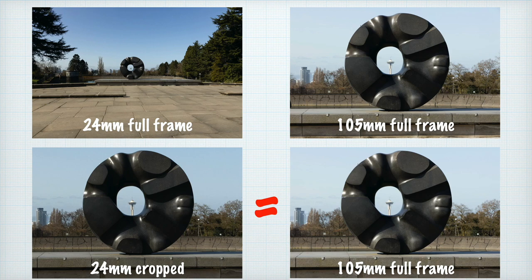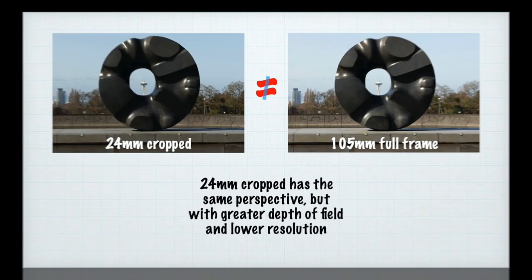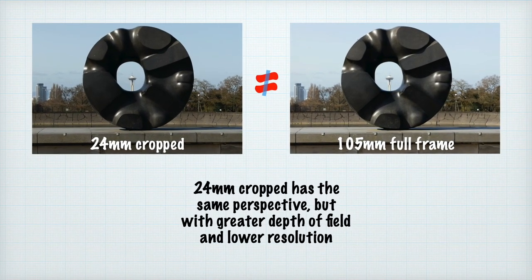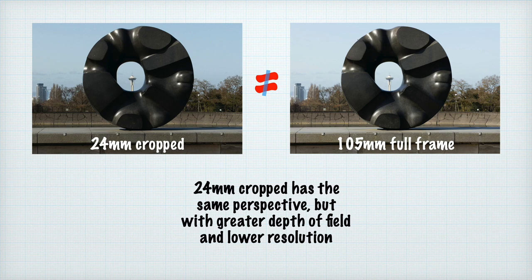You can take two photos from the same camera position with a short and a long lens, crop them to the same framing, and see the same compression in the area common to both. At first the two photos might look the same, but there are differences: the depth of field will be deeper in the cropped wide-angle image, and you have to enlarge the crop quite a bit, losing resolution. A long lens gives the same visual effect as cropping a photo in post-production, but keeps the original quality.